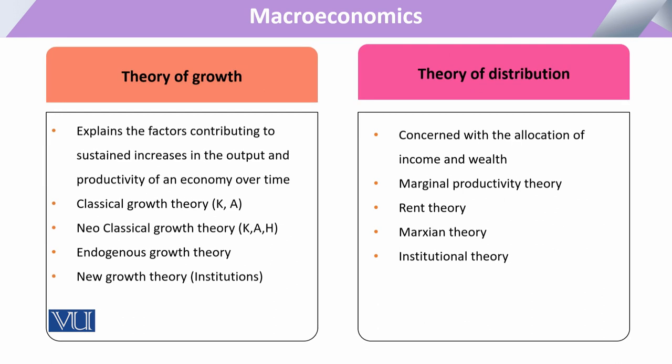The third major group is the theory of growth. This includes various theories starting with the Solow-Swan model, then the new endogenous growth theory, new classical theory, and the institutional part. The fourth is the theory of distribution, which is concerned with all aspects of the economy — whether income, wealth, or related factors — and how these are distributed among all the factors of the economy. This theory is also very important for macroeconomics.